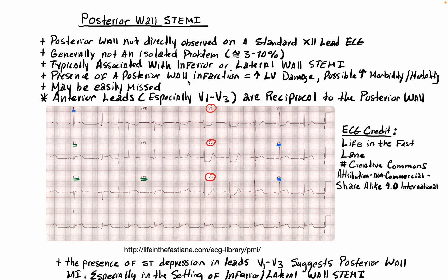The concept of reciprocal change comes in handy here — it is actually critical to understand. Reciprocal change is when you have elevation in leads that look at one area of the heart. A very powerful indicator that that elevation is due to coronary ischemia and acute occlusion is that the elevation is accompanied by depression in areas of the heart completely opposite to that. The classic area where we see this is in the inferior and high lateral leads — leads I and AVL are quite reciprocal to the inferior leads II, III, and AVF. This is also the case when it comes to the anterior and posterior walls of the heart.